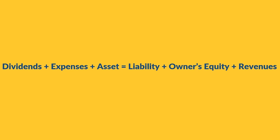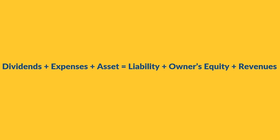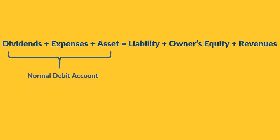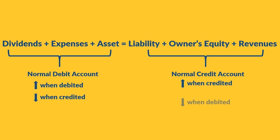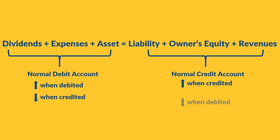On one side we have the normal debit accounts — they increase when debited and decrease when credited. On the other side we have the normal credit accounts — they increase when credited and decrease when debited. Debit is always on the left and credit is always on the right. And if we take the first letter of each element in this equation, we get our secret weapon: D-E-A-L-E-R. Dealer.